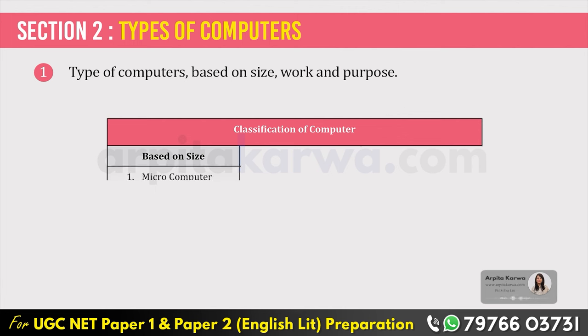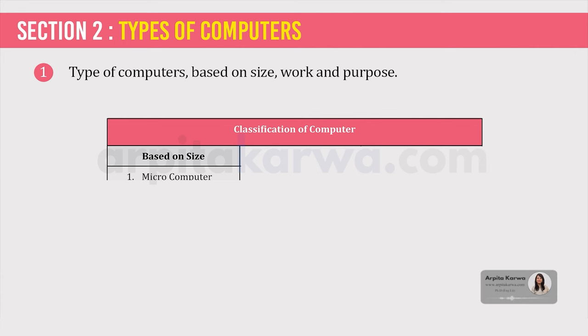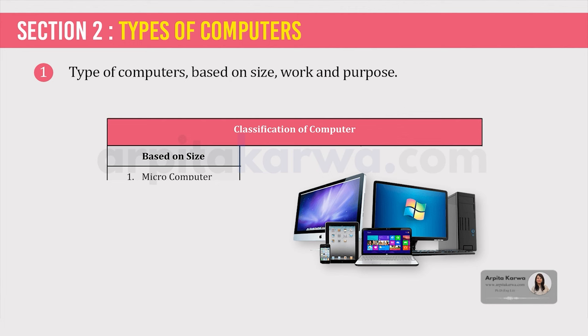The first category is microcomputers or personal computers. These are the ones we normally use in daily life. They are used for recording personal data. Laptops, tablets also fall in the same category. These are practically inexpensive and very small. Examples of these are desktop computers, notebook computers, handheld computers, laptops, tablets and smartphones.